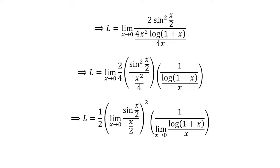After canceling out the common factor 2 in the numerator and denominator and application of properties of limits, we can rewrite the above expression as L equals 1/2 times the square of the limit of sin(x/2) / (x/2) times 1 over the limit of log(1 + x) / x as x approaches 0.